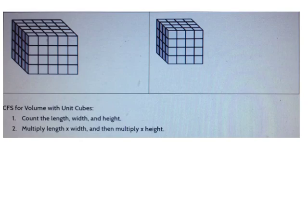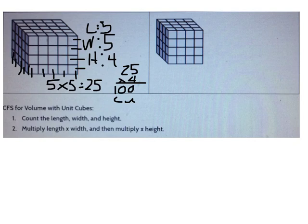Now you try two on your own. Take a look at the first one on the left. The volume is 100 cubic units. The length is 5, the width is 5, and the height is 4. 5 times 5 is 25, and 25 times 4 is 100.